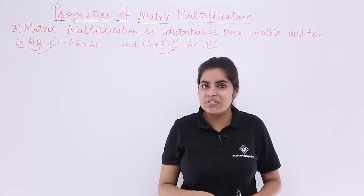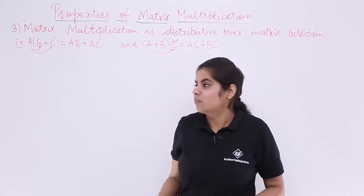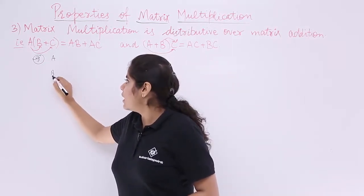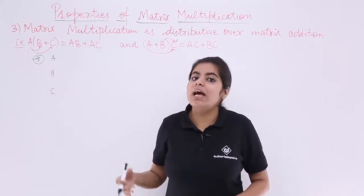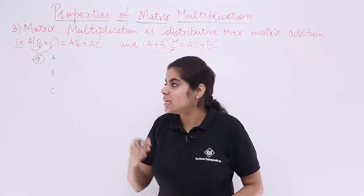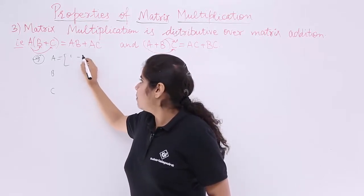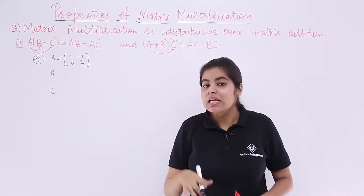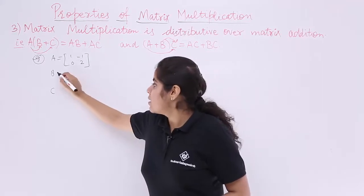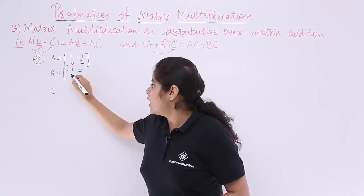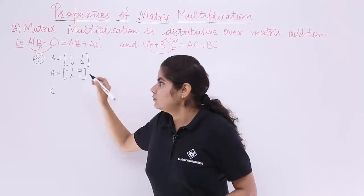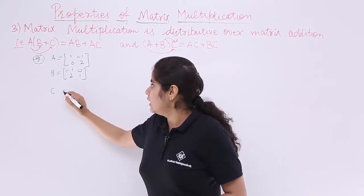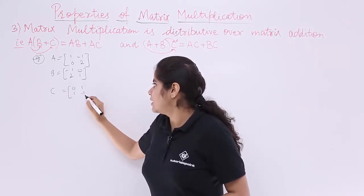For this, let's take three matrices, as we did for associativity. We have three matrices. Matrix A is [1, -1; 0, 2]. The second matrix, matrix B, is [-1, 0; 2, 1]. The third matrix, matrix C, is [0, 1; 1, -1].